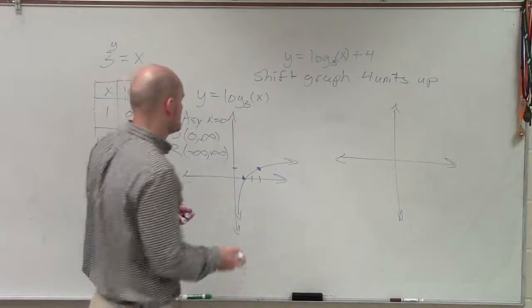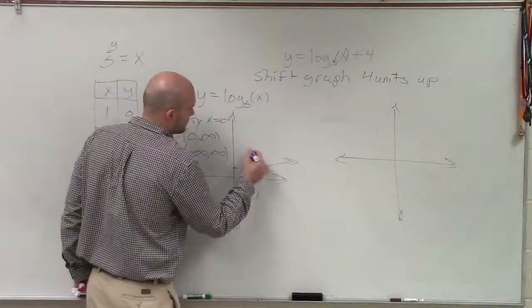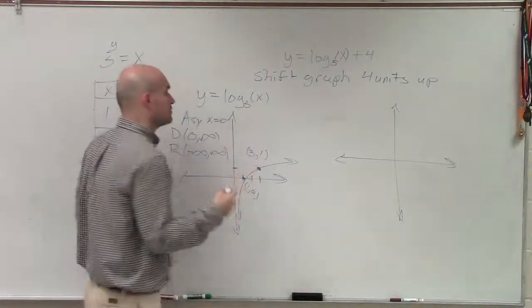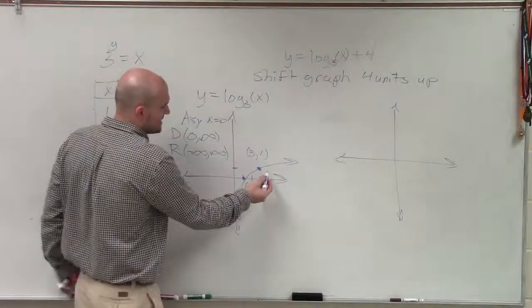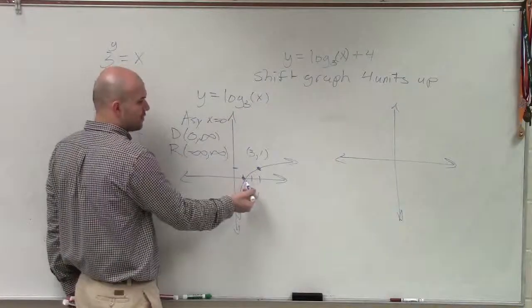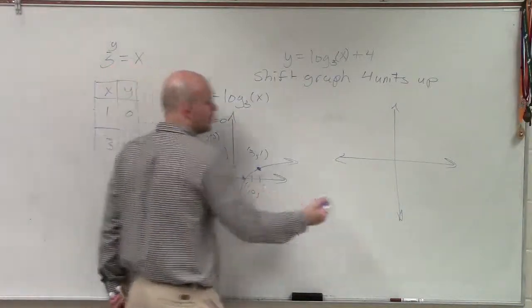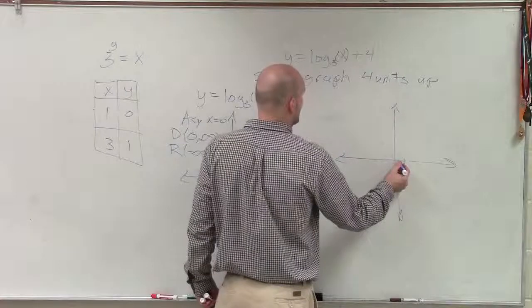Now what we're going to do is take this graph and shift it four units up. So I'm just going to simply take these points and shift them four units up. So if I go over 1, up 0, I'm now going to go over 1, up 4.